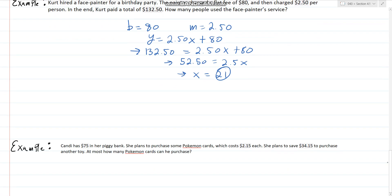We have one last question here. I don't know if I can do it in 30 seconds, but we can say that with $75 in the piggy bank, we can subtract 34.15. We're going to get 40.85 over the $2.15 per card coming to $19. Again, we have $75 total for Pokemon cards which cost $2.15 each. She plans to save $34.15, so we subtract that and then divide the difference by the cost per Pokemon card. That gives us a total of 19 Pokemon cards.